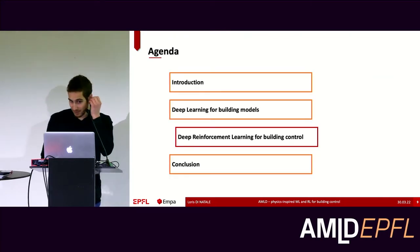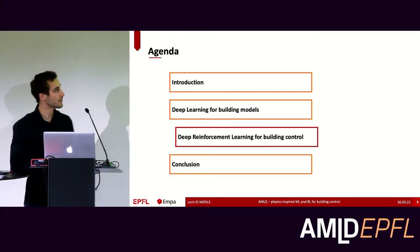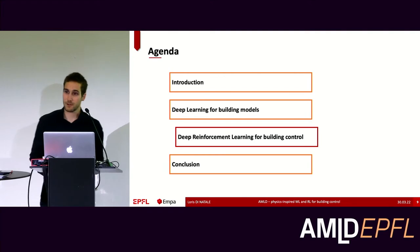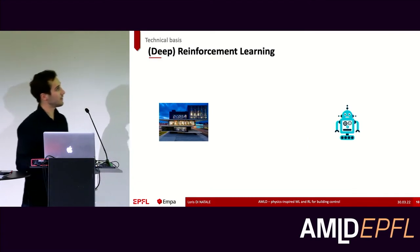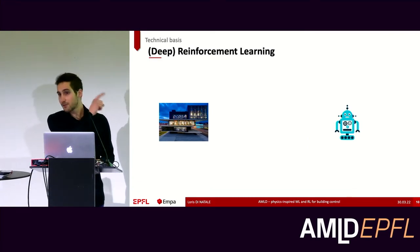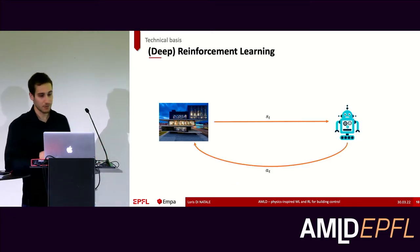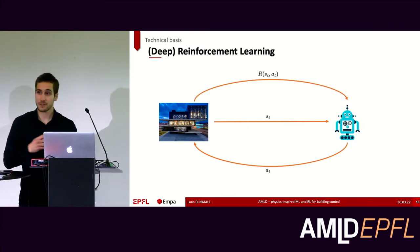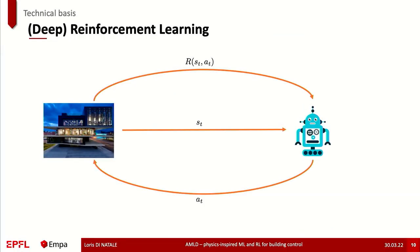Now that we have the models, we can look at how to use them to actually save energy in the real world. We propose to use deep reinforcement learning, which is just one of many control techniques that can be used. The way it works is that you have an agent interacting with your building. At each time step, the agent observes what's happening, decides what to do, and is rewarded for it. We tell the agent how good or bad its decisions were, and by iteratively interacting with the building, the agent learns to maximize the reward and take the best actions possible.